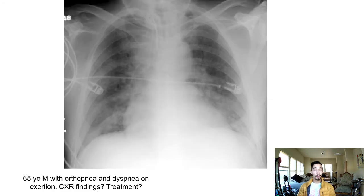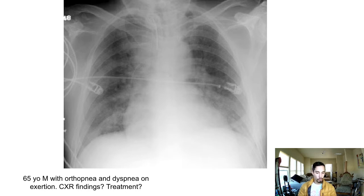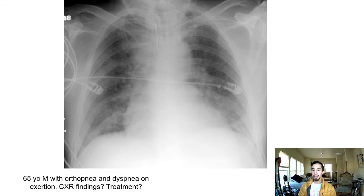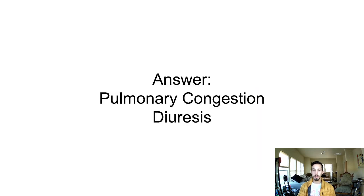First question: 65-year-old guy with orthopnea and dyspnea on exertion — you see this on chest X-ray. What's the treatment? The diagnosis: dyspnea, orthopnea, bilateral infiltrates more prominent in the lower lobes, maybe you can't see the diaphragmatic angles well, maybe the heart border is a little fuzzy — this is probably heart failure. Treatment in this case would be aggressive diuresis.